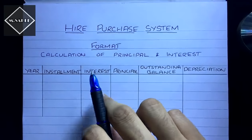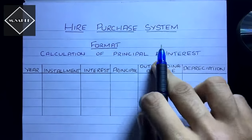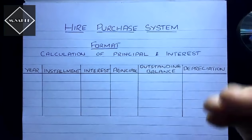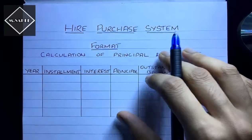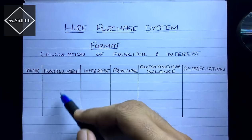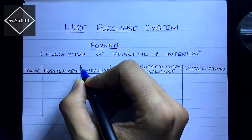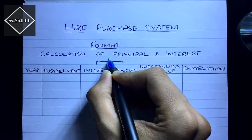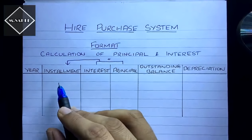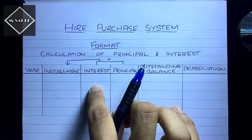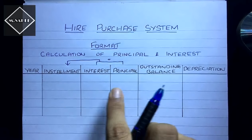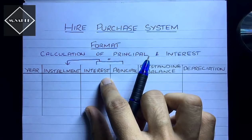This working note is a table for the calculation of principal and interest. The format may differ from your books - it's just a working note, you can do it any way you like. The first column is years, then the installment column. Installment comprises of interest and principal. If the installment is not given, you first calculate the interest and then add it with the principal amount to get the installment.